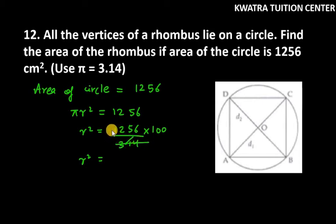Now, if you divide 1,256 by 3.14, then you will get 400. So, r² equals 400. Now, the value of r will be √400, or you can write it as 20 cm.